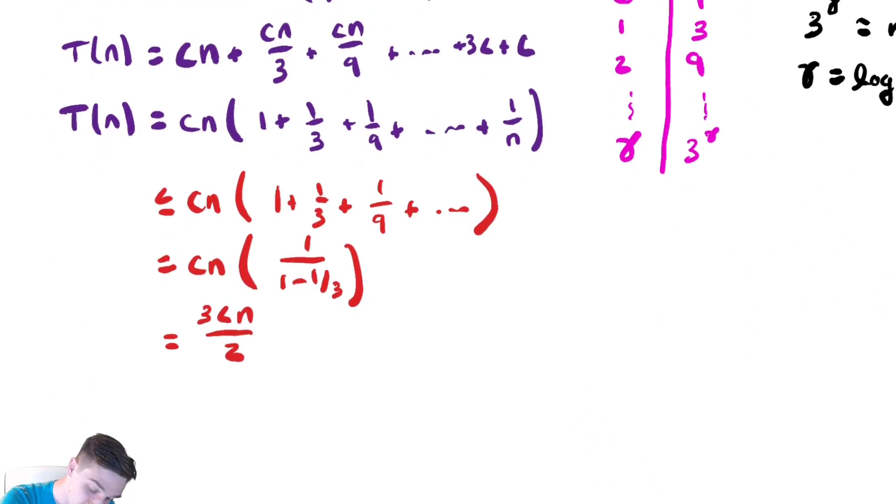And as we've seen before, we want to bound this below to bound it below. We are going to drop every single term except for the first, because all we need to do is make this look like something times n. There are a million ways we could do this, the easiest of which would be to drop everything except the first term.